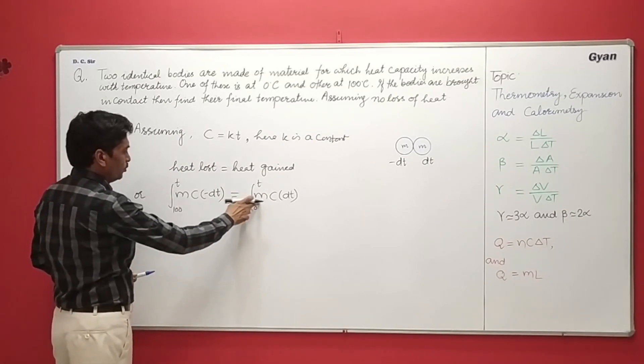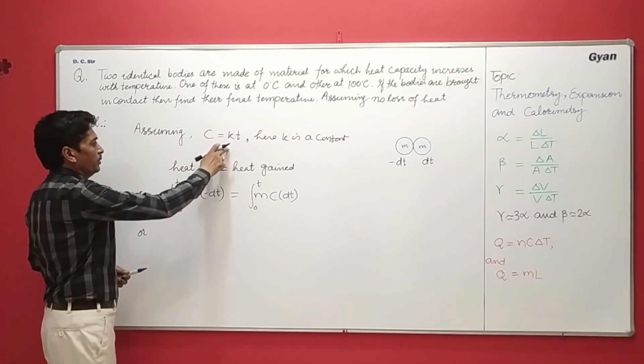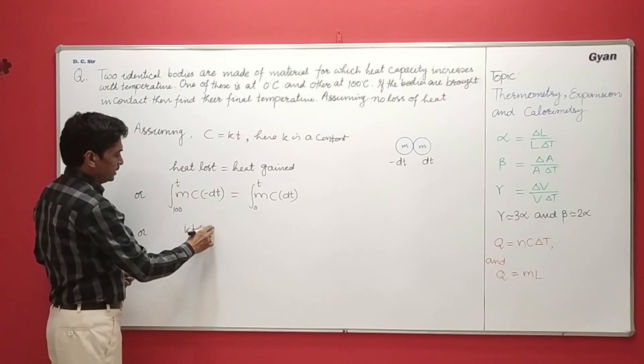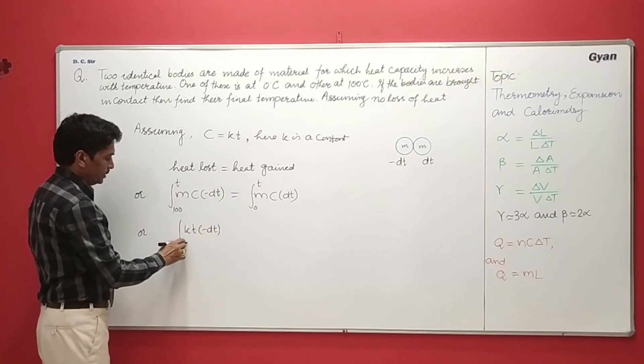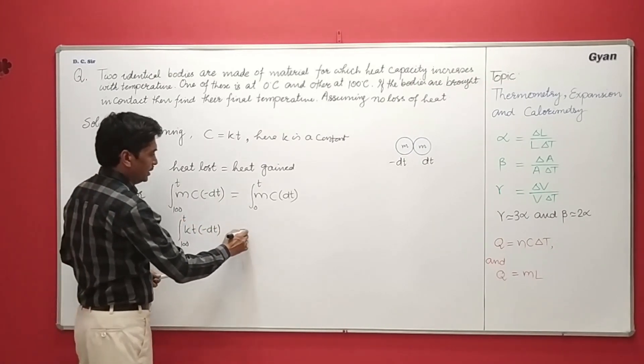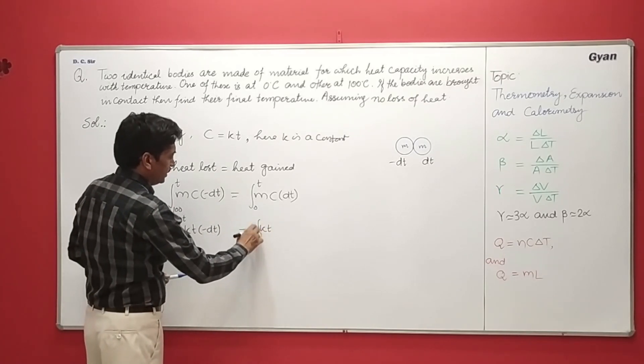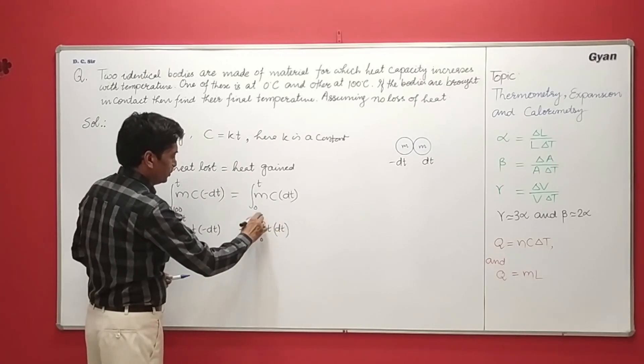Now M can cancel out from both sides. So we simply put the value C equal to KT here. So minus DT, K times T integration from 100 to T and here it is KT integration from 0 to T.